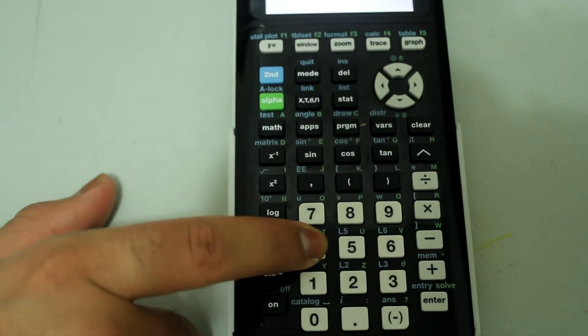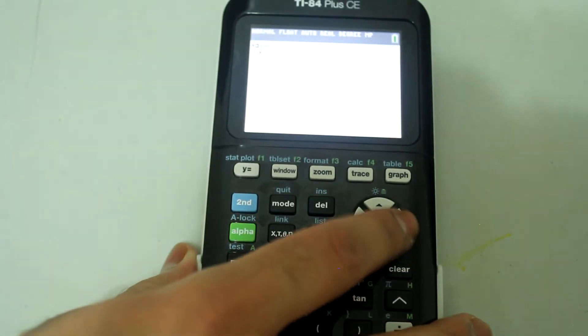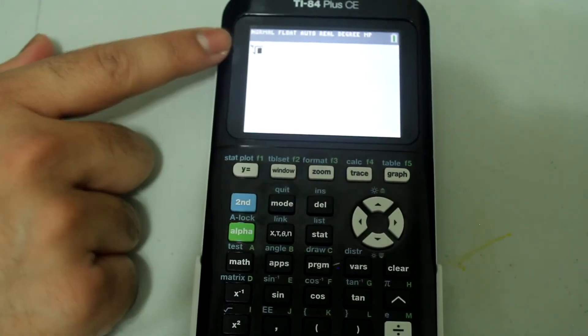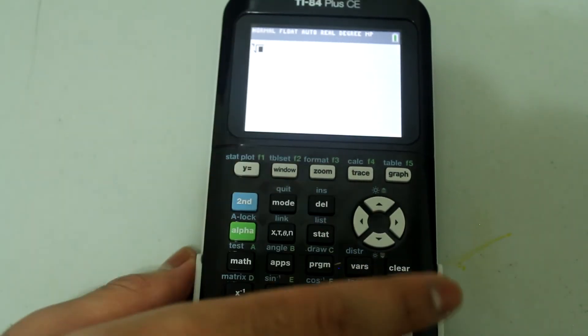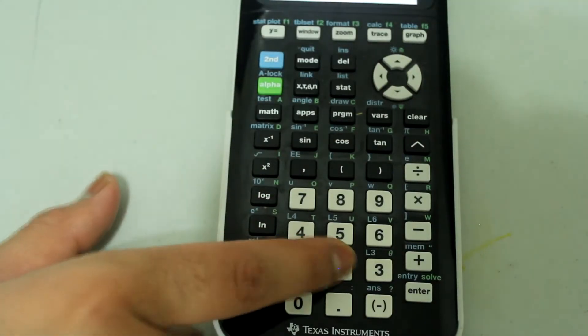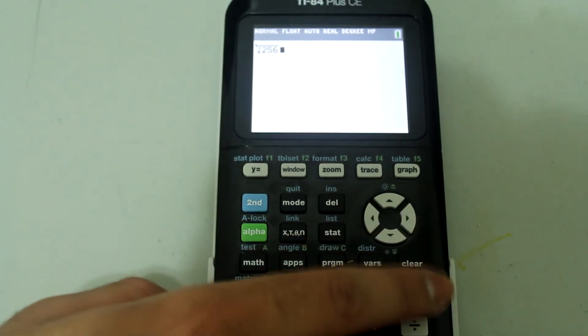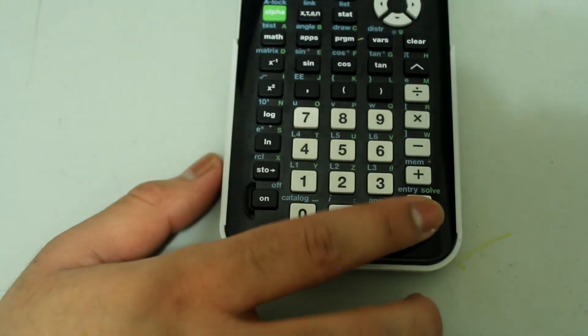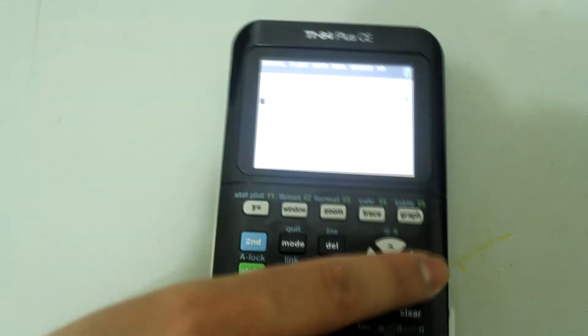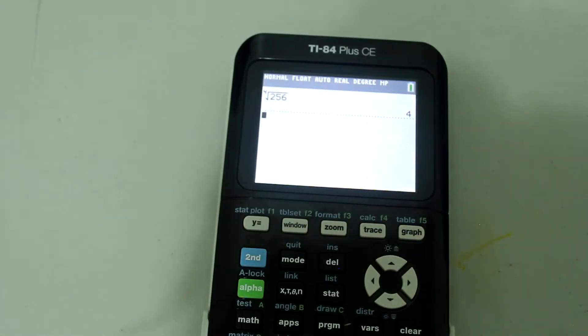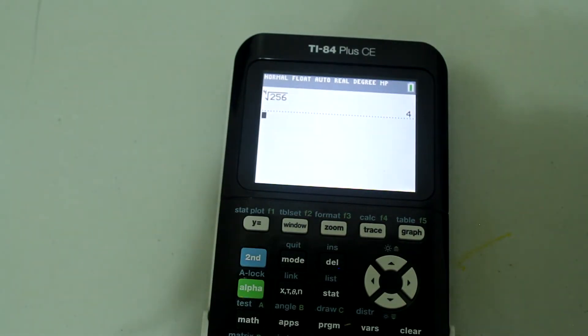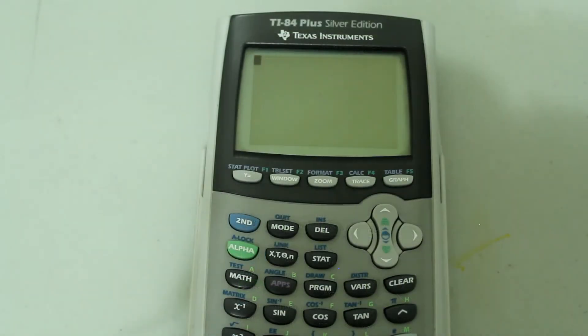And type in 256. So the entry looks like this. And then press enter and I get the fourth root of 256 as four. On the TI-84 Plus Silver Edition, it's quite similar with a subtle difference.